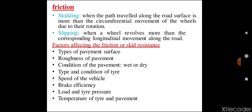Lack of friction can cause skidding or slippage of a vehicle. When the path travelled along the road surface is more than the circumferential movement of a wheel due to rotation, it is called skidding. When the wheel revolves more than the corresponding longitudinal movement along the road, it is called slipping.